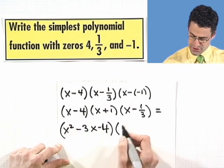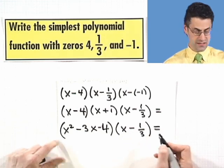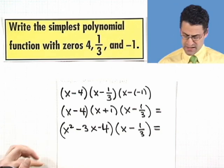And I have that trinomial multiplied by (x - 1/3). And we can actually sort of do a super FOIL, if you will, on this. Here's the way to think about it.